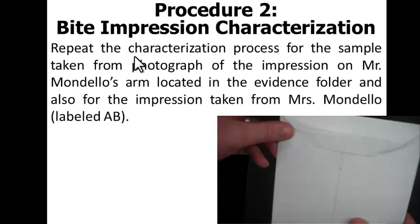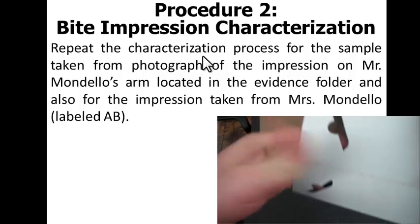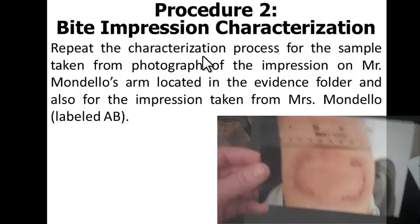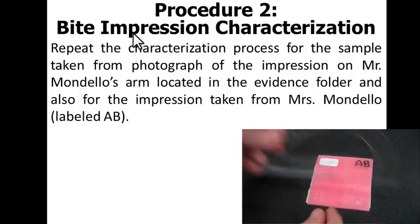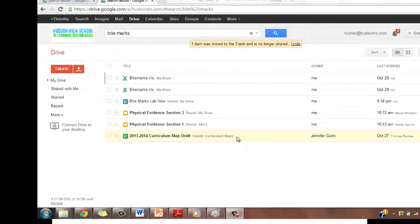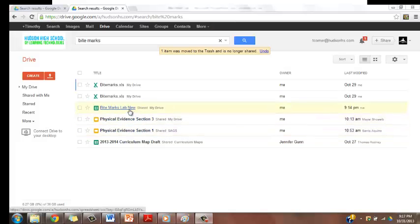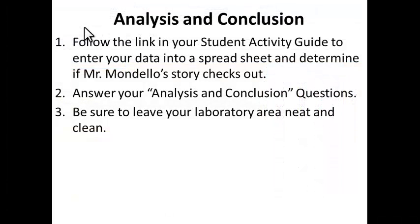You're going to repeat this characterization process for the sample taken from the photograph of the impression on Mr. Mandela's arm, located in the evidence folder at the front of the room, and also for the impression taken from Mrs. Mandela, which is labeled AB in the corner with a black marker. So you're going to do this entire procedure of bite impression characterization three times. When you finish, follow the link in your student activity guide to enter all of your data into a spreadsheet. From this, you should be able to determine if Mr. Mandela's story checks out. Then go ahead and answer your analysis and conclusion questions.